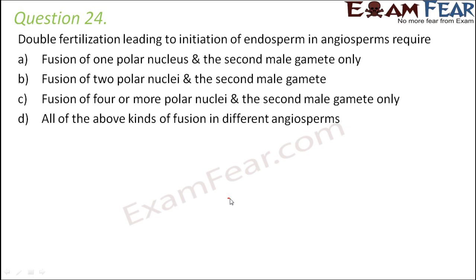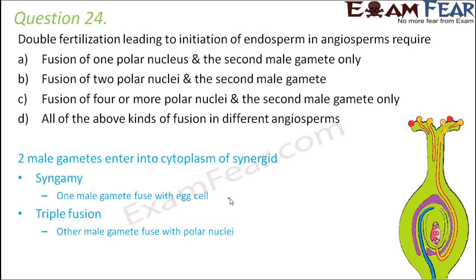What do we mean by double fertilization? Why do we say that double fertilization takes place in case of angiosperms? In angiosperms, two fertilizations take place. Two male gametes enter into the cytoplasm of the synergid, and these two male gametes undergo two different fertilizations with two different female gametes.